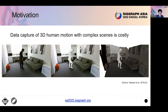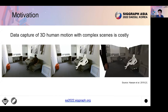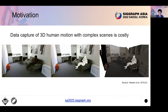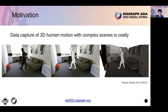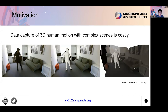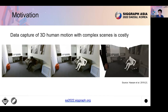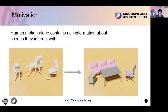Nowadays, large-scale capture of human motion with complex scenes is immensely useful, but building high-quality datasets annotated with both human motions and 3D scenes is very challenging because it depends on costly devices, such as MoCap systems, and therefore can only be conducted in laboratory settings. Meanwhile, human motion alone contains rich information about the scene they interact with.